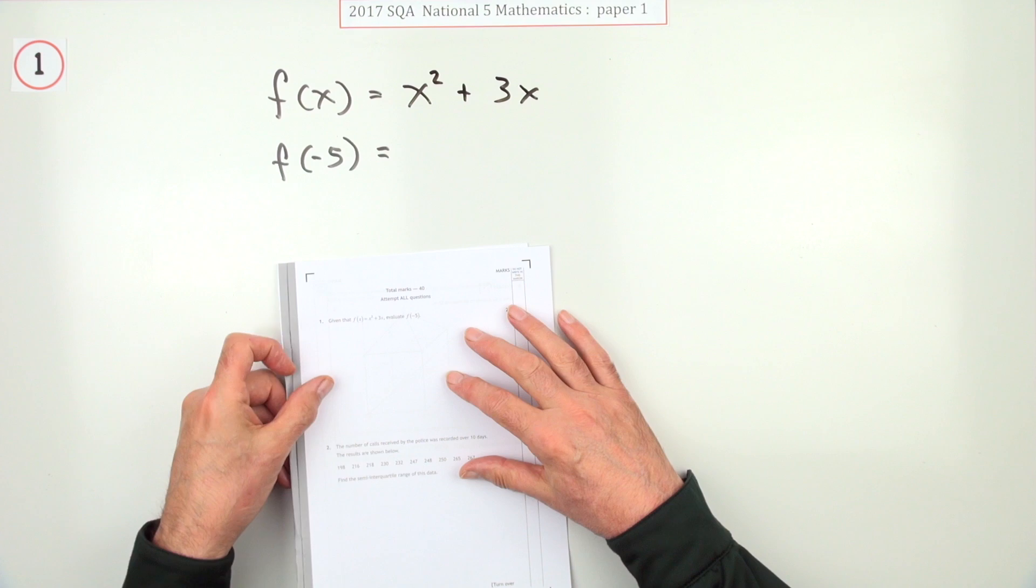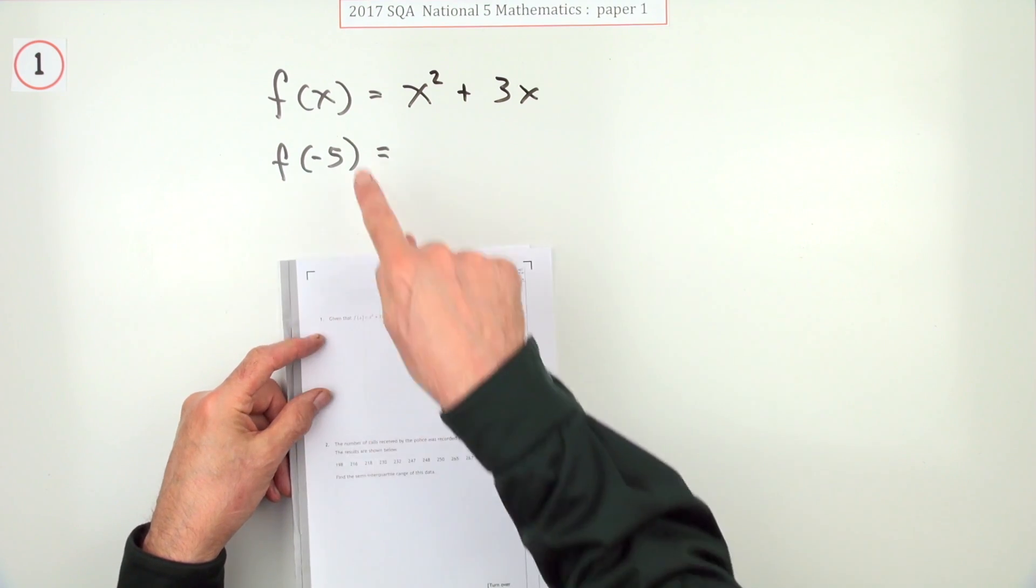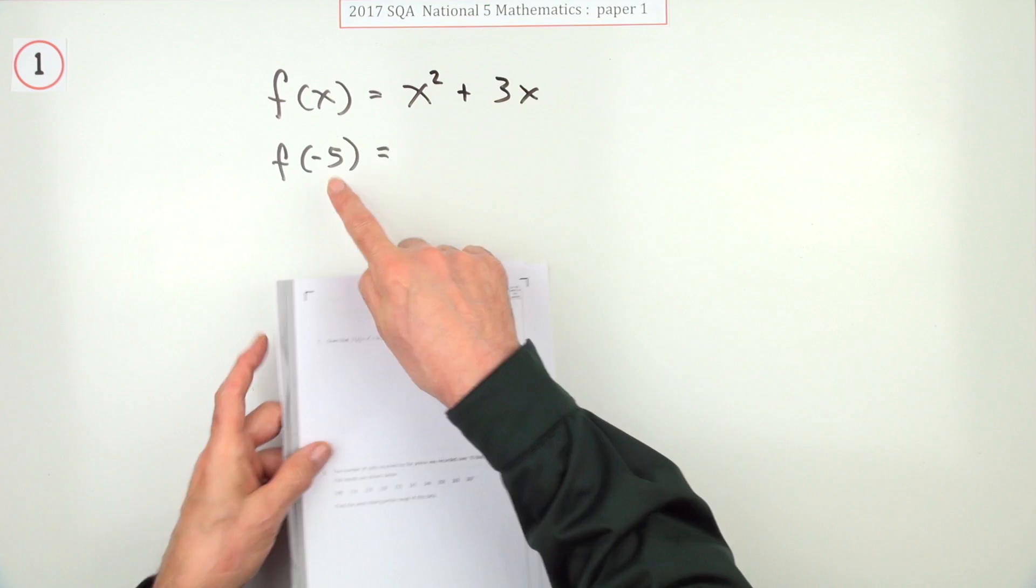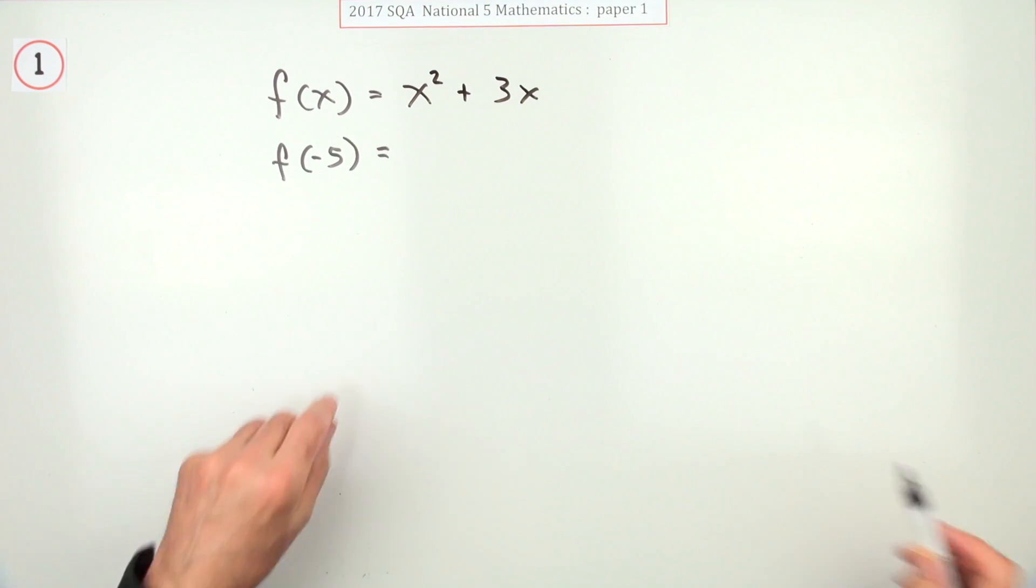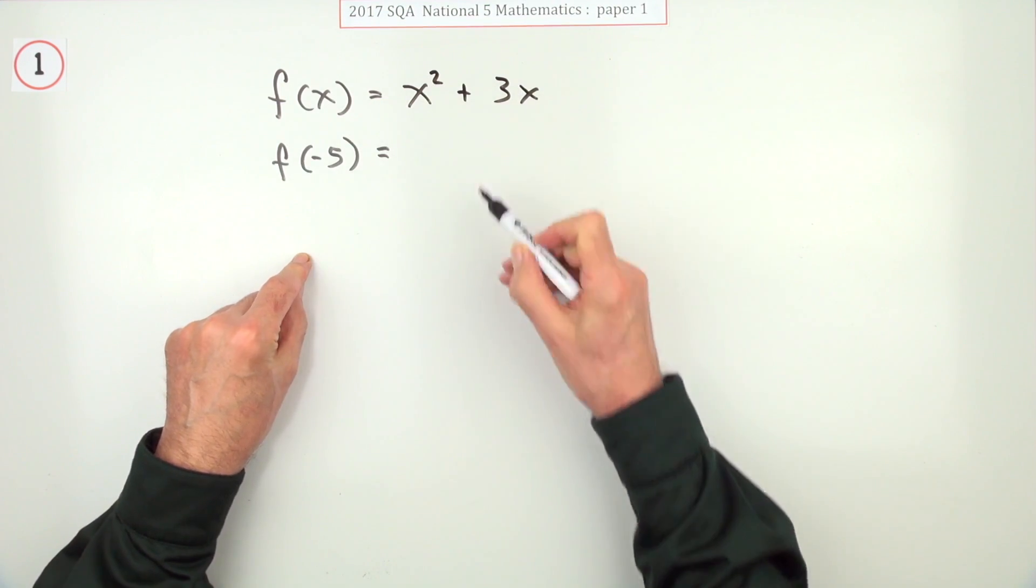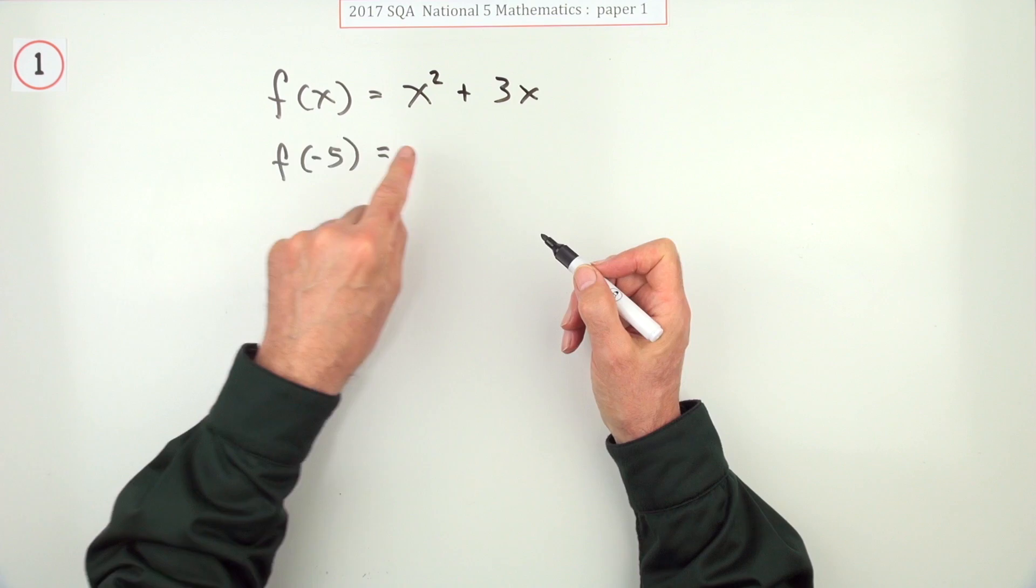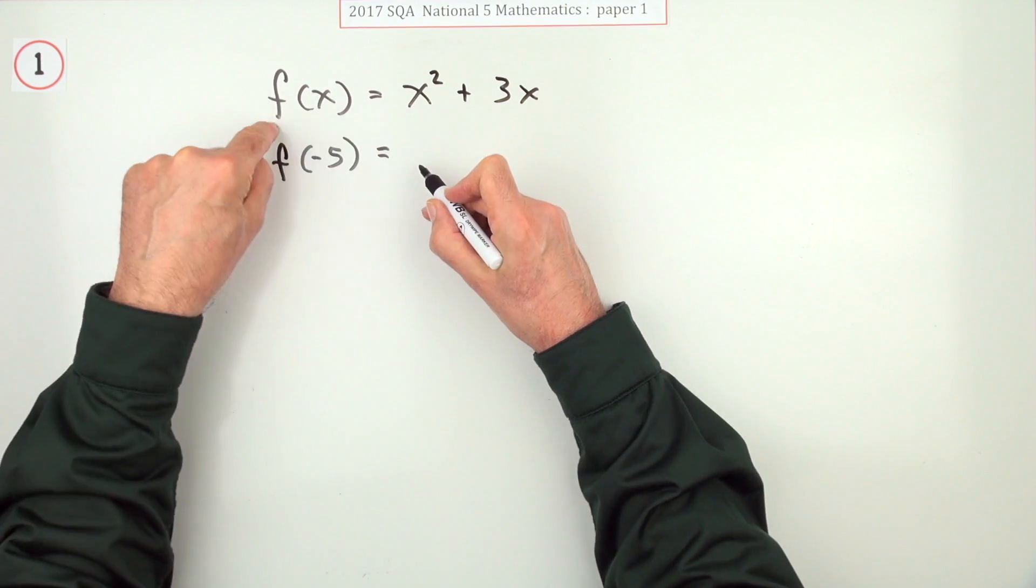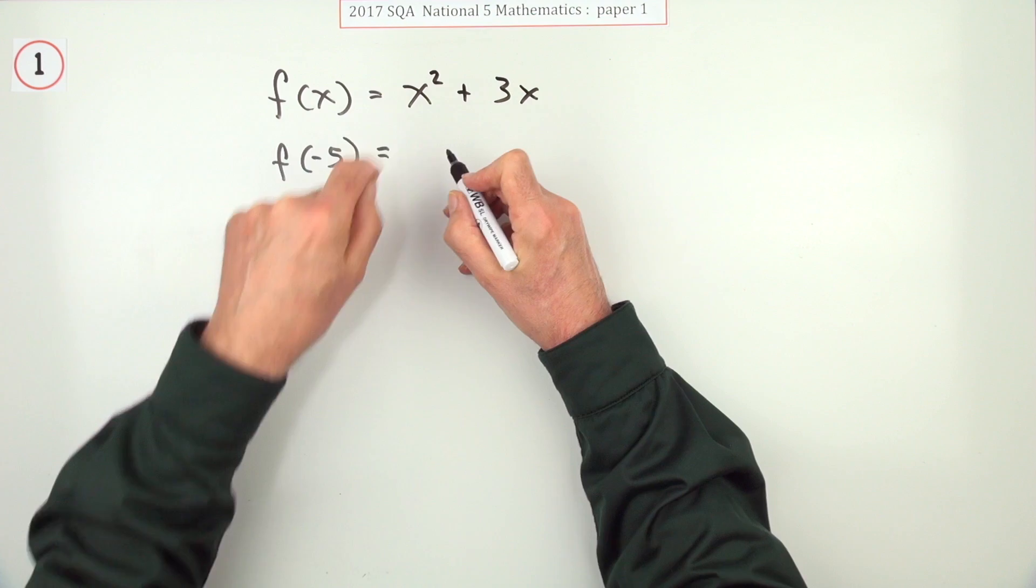So the first question in the 2017 National 5: evaluate a function here, putting in a negative number as you might expect. Well, it's handy if you have it written like this because then it's more obvious that all you do is substitute negative 5 for the x. This says give me x and I'll square it.